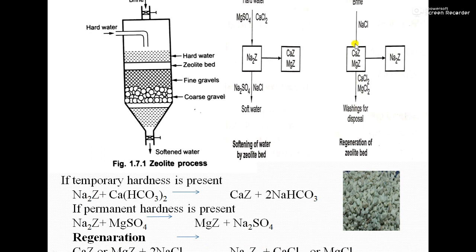This regeneration is shown diagrammatically. NaCl reacts with CaZ and MgZ, the calcium and magnesium chlorides are removed, and the zeolite bed is restored as Na₂Z. That completes the zeolite process reactions and regeneration.